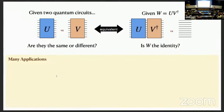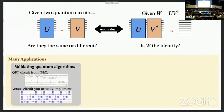It's a very simple question, but there are many applications. One is validating quantum algorithms. Here's the quantum Fourier transform circuit from Nielsen and Chuang. But for whatever reason, maybe in your quantum computer, you can't implement all these gates, so you have to implement it a different way. Ideally, you'd like some way to verify that it's the right circuit. Or let's say someone gives you the circuit — like a student in your quantum information class — and you want to grade their homework.